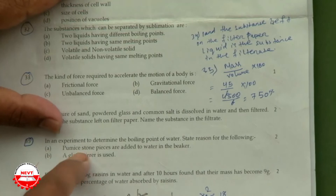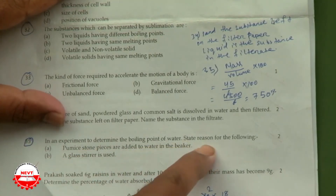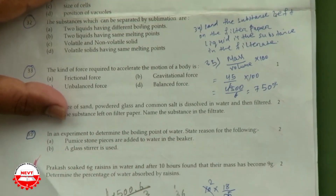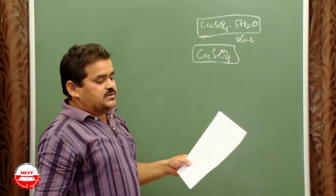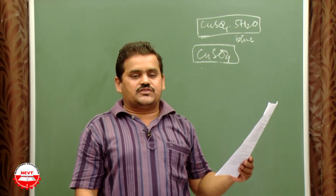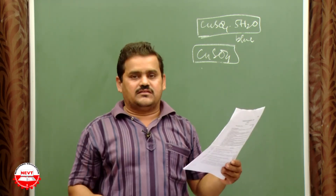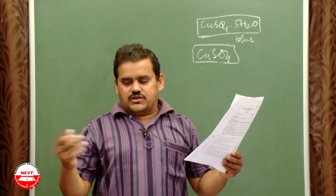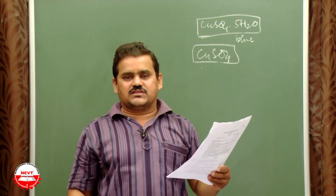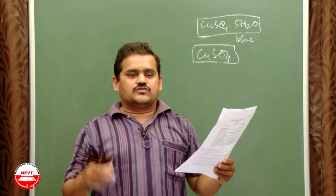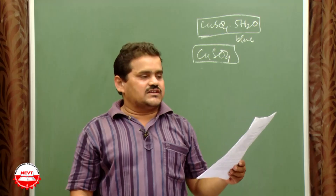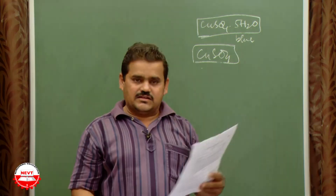In an experiment to determine the boiling point of water: pumice stone pieces are added to the beaker to prevent excessive bubbling during boiling — they reduce violent convection when water is heated. A glass stirrer is used because water is a bad conductor of heat, so stirring ensures uniform heating.